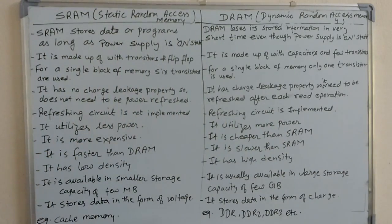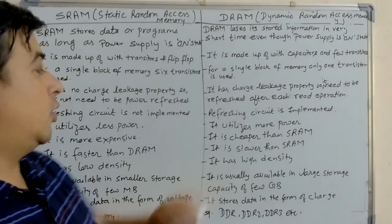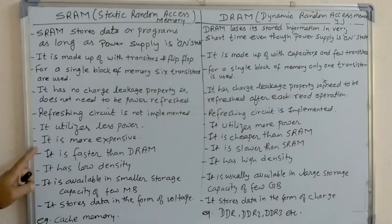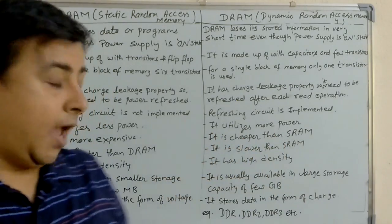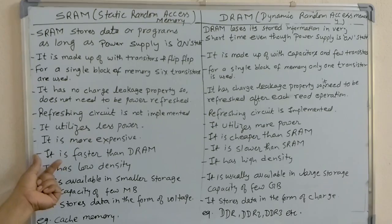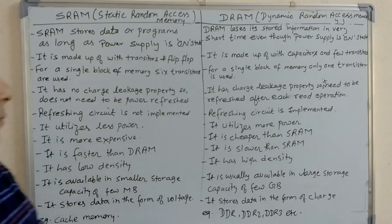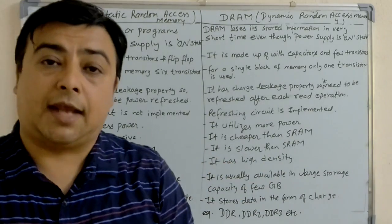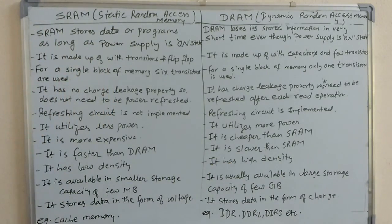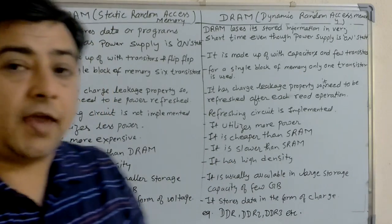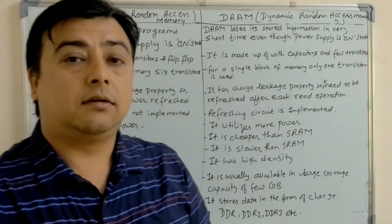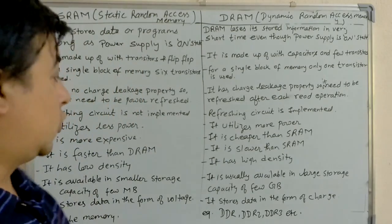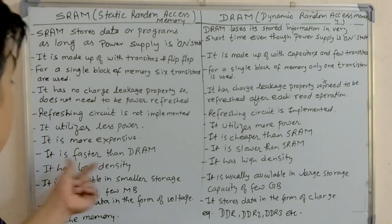SRAM utilizes less power, while DRAM utilizes more power. SRAM is more expensive than DRAM, and DRAM is cheaper than SRAM. SRAM is faster than DRAM. Cache memory is an example of SRAM, and cache memory is faster than RAM, so SRAM is faster than DRAM.